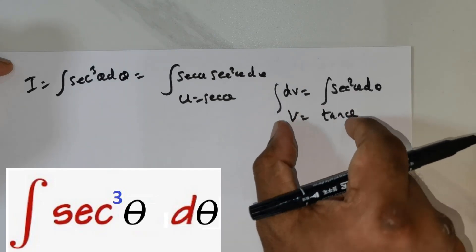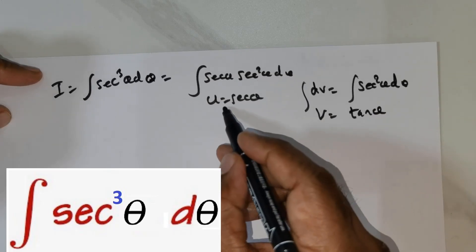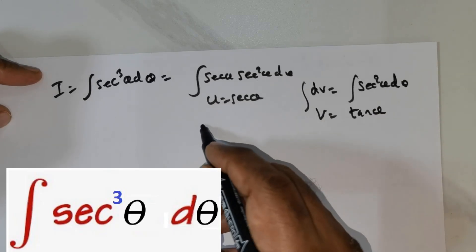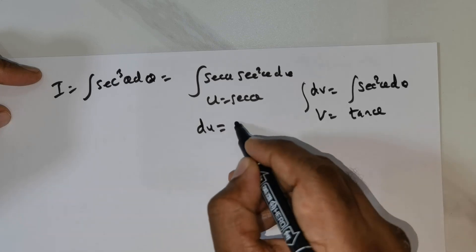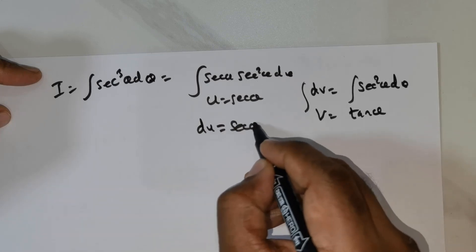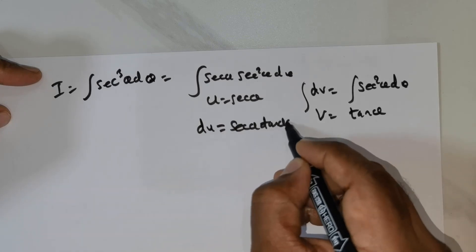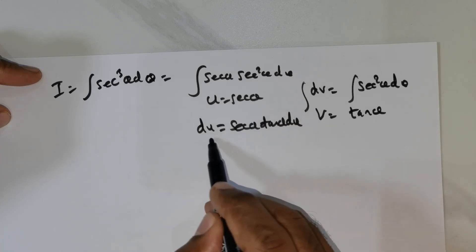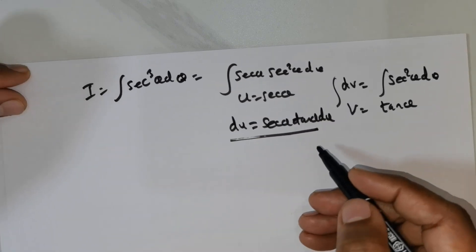I have shown you how to get this. In the case of u being equal to secant theta, we need to get du. du is secant theta tan theta times d theta. I also showed you how to differentiate this.